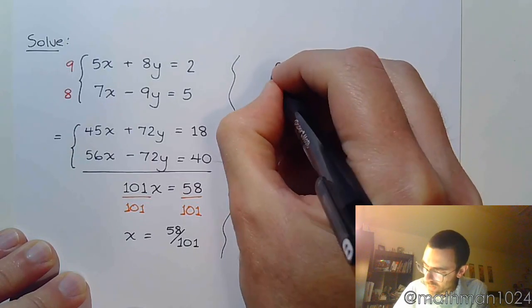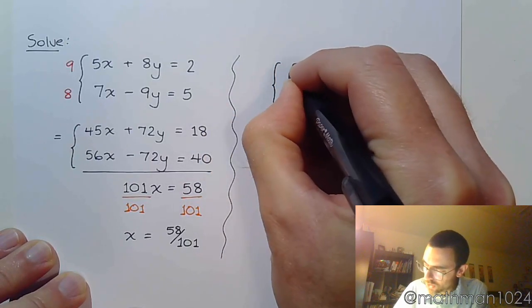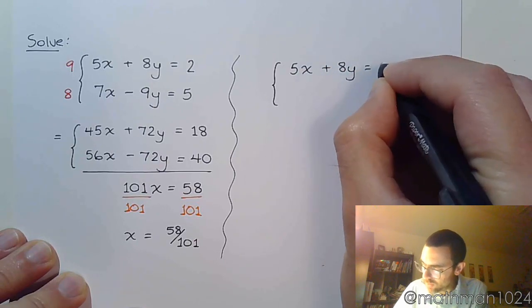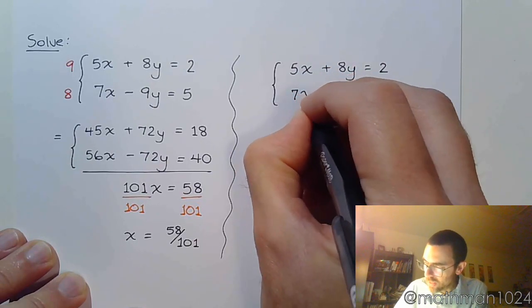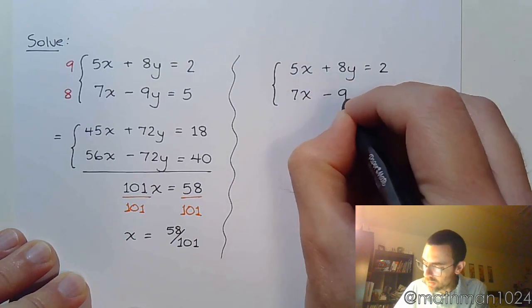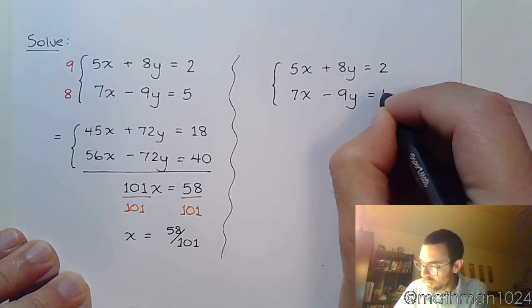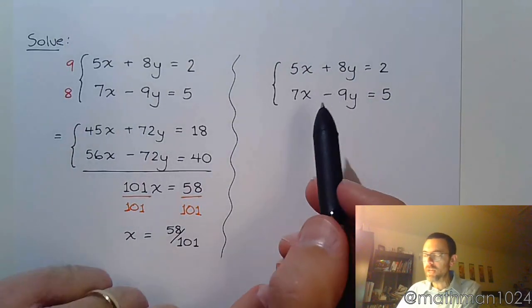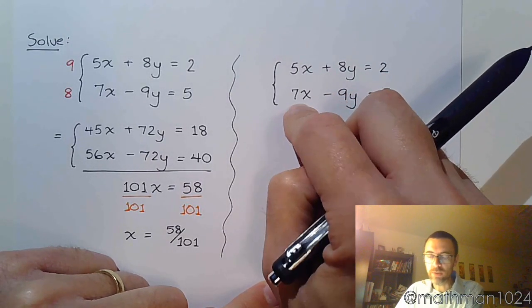Instead of doing that, I suggest you come back to this original system. So let's rewrite the system. And instead of trying to eliminate the y, eliminate the x. Right? We already know what x is. Right? So let's come back up here and let's try to get these guys to cancel each other out.